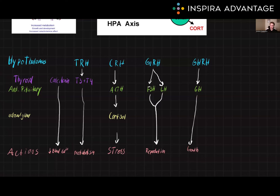High blood calcium levels can lead to a condition called hypercalcemia, which can cause damage to the kidneys, heart, and nerves. Low blood calcium can lead to a condition called hypocalcemia, which can cause muscle cramps, tetany, and nerve problems. It's important to note that calcitonin acts in concert with parathyroid hormone, PTH, which is produced by the parathyroid gland. PTH increases blood calcium levels, and the balance between these two hormones is critical for maintaining proper calcium levels in the body.